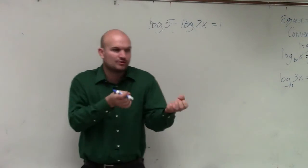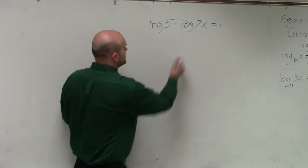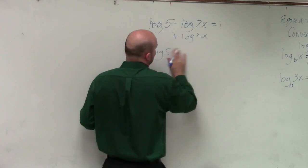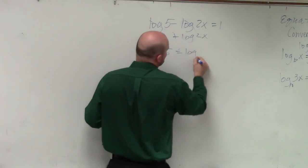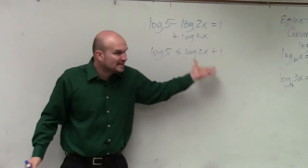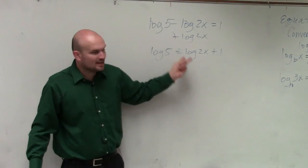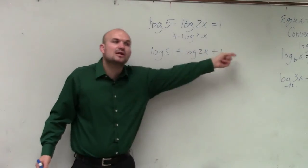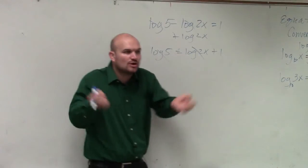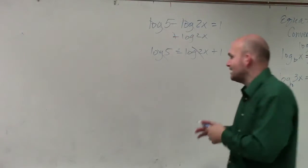It only works when you have a logarithm equal to another logarithm. So then what students like to do, again this is wrong so you don't need to write this, but they add the logarithm to the other side, which is okay, but the logs still don't equal each other. This is log equal to the other log, but then plus one. So again, you can't just cancel them out because there's that one there. It only works when a log is equal to a log.